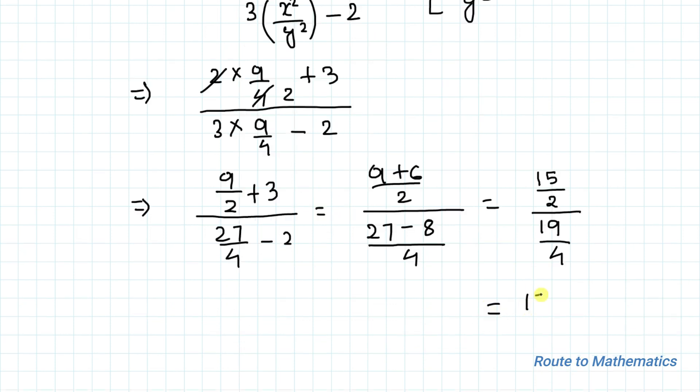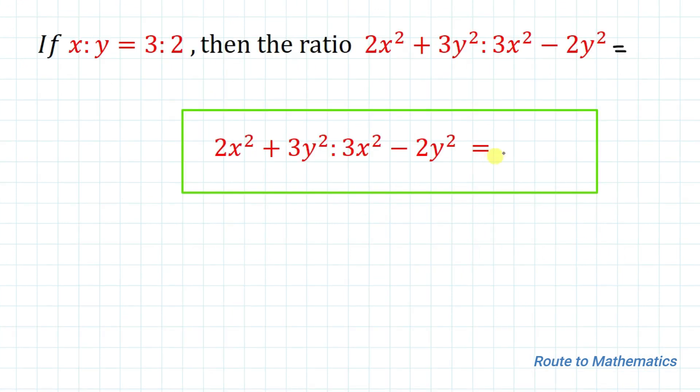So this can be written as 15 by 2 multiplied with, this will get reciprocal. So we have 4 by 19. So this is nothing but 30 is to 19.